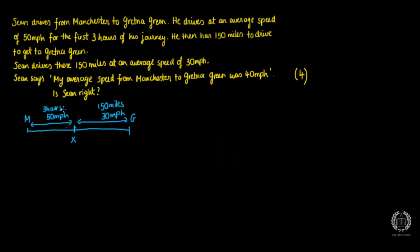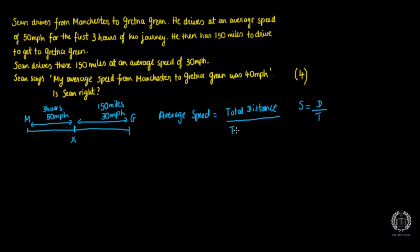Now, Sean says his average speed from Manchester to Gretna Green was 40 miles per hour. Average speed — the formula for speed is: speed equals distance over time. For average speed, I'm going to look at the total distance from Manchester to Gretna Green divided by the total time it takes. Once I have those values, I divide them to get the average speed, then compare that with Sean's statement to see if it's right or wrong.